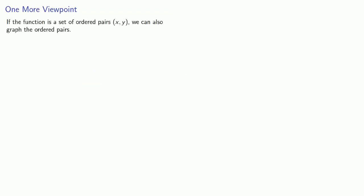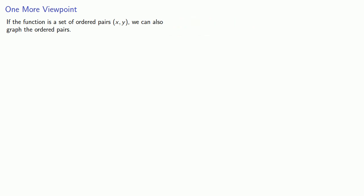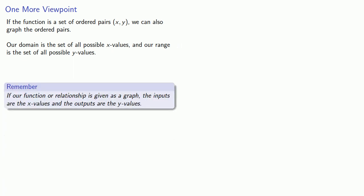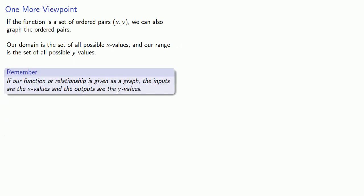We can take another viewpoint as well. If the function is a set of ordered pairs, we can also graph these ordered pairs. In that case, our domain is the set of all possible x values and the range is the set of all possible y values. If our function or relationship is given as a graph, the inputs are the x values and the outputs are the y values.